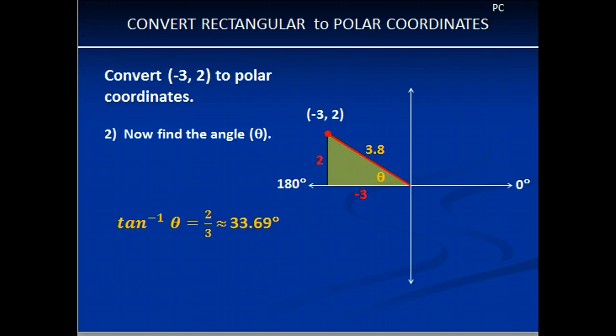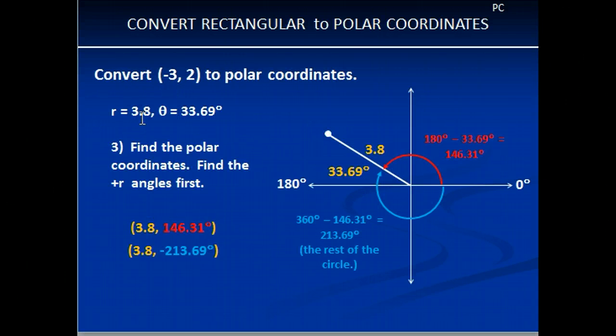Now that we have that information, we've got our r is 3.8 and our theta is 33.69. Now we can find our polar coordinates or our angles.